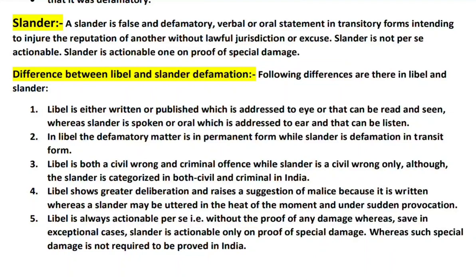Libel shows greater deliberation and raises a suggestion of malice because it is written, whereas slander may be uttered in the heat of the moment and under sudden provocation. Therefore, libel is considered more serious because it is in written form, while slander is considered less serious and less actionable. In libel, the statement is actionable without proof of any damage — even if no damage has occurred and there is no proof of damage, libel is still actionable.